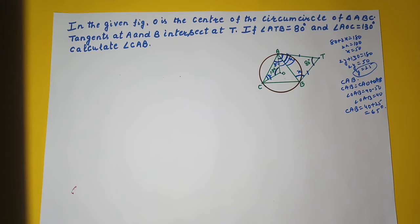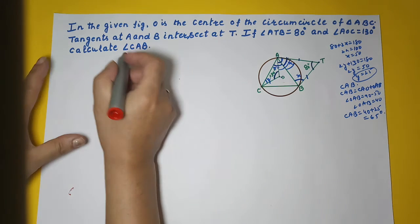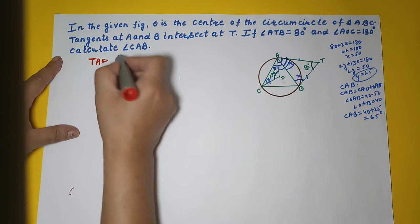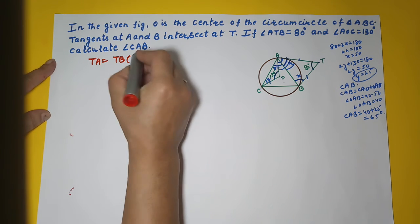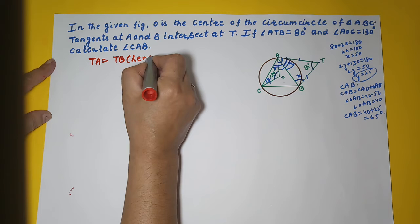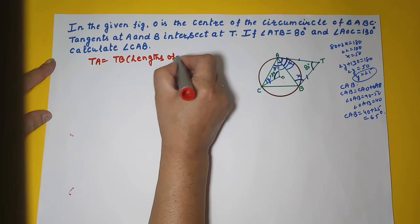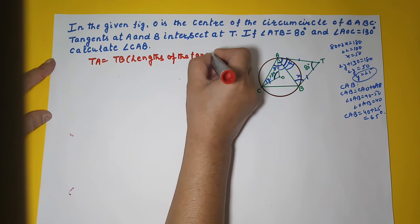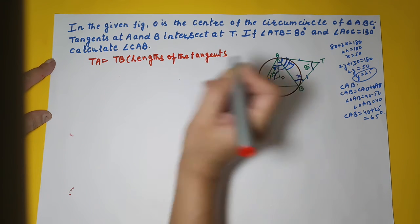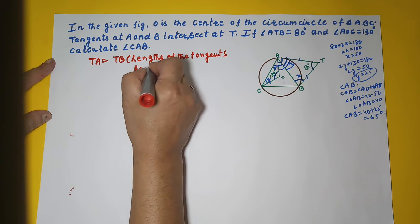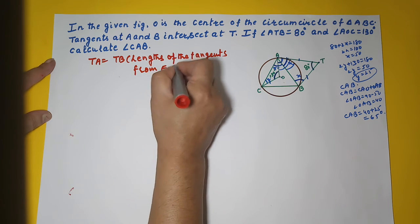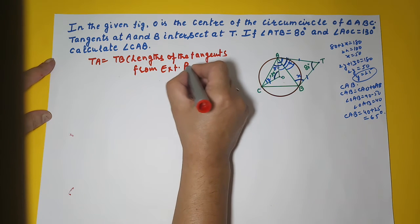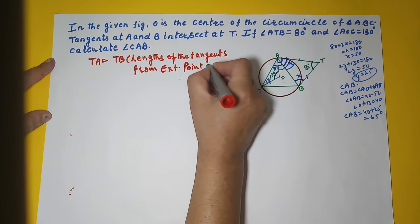So let's write it now. We will write: since TA is equal to TB, reason: length of the tangents drawn from the external point T are equal.